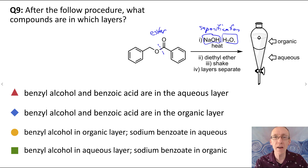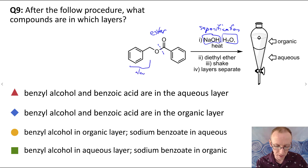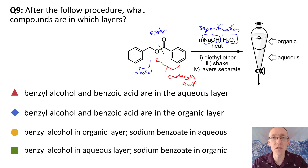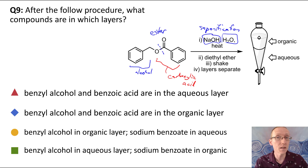Whenever we have an ester and we hydrolyze it, we break across that bond to make an alcohol on one side, and on the other side we're going to have a carboxylic acid. But under the basic conditions, the carboxylic acid is going to be deprotonated, so we're going to have the carboxylate conjugate base of the carboxylic acid.